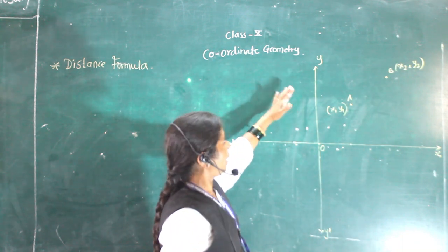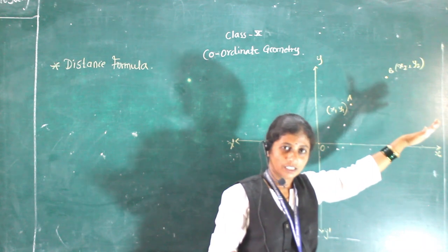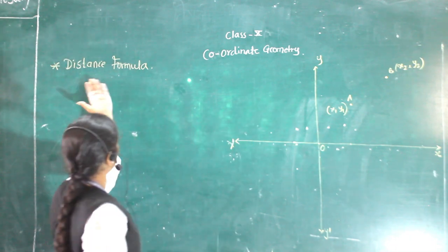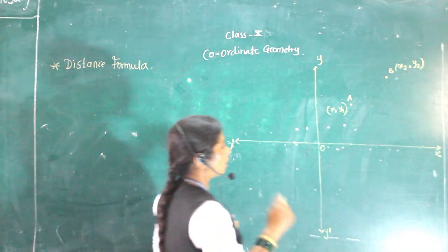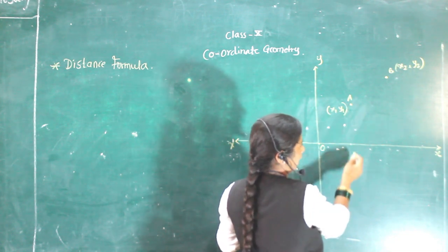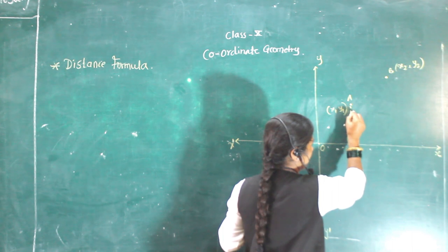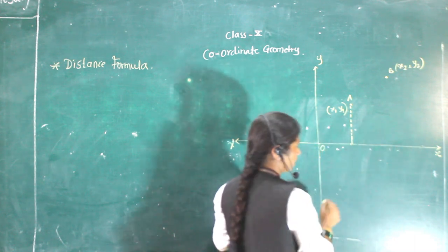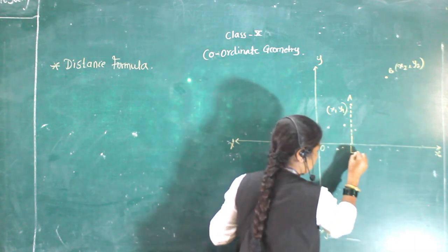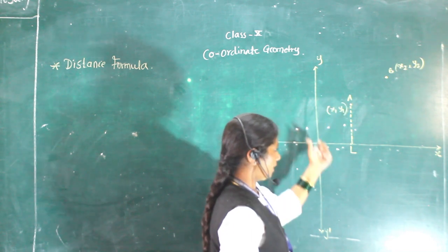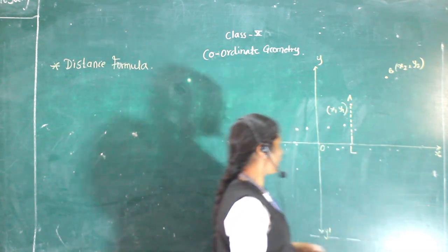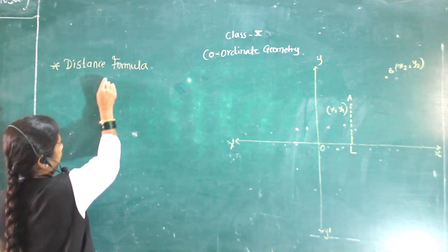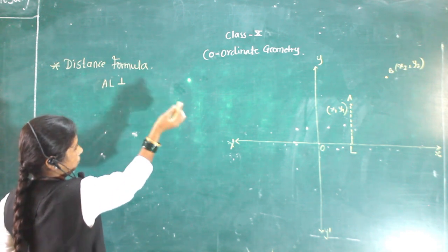To find out the distance between two points, we have to make the formula. We will see the definition of the distance formula. For that purpose, we draw a perpendicular distance from point A to OX. We will write the name OL, so AL is perpendicular to OX.